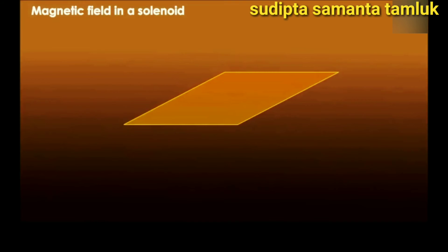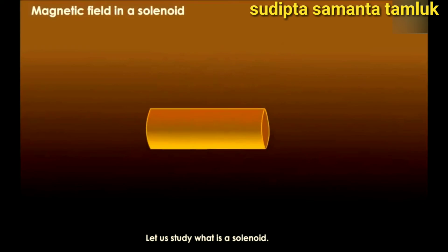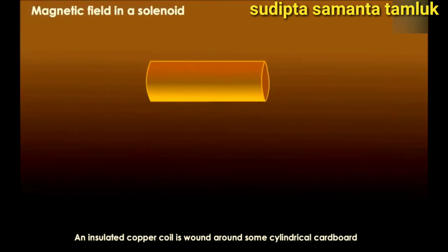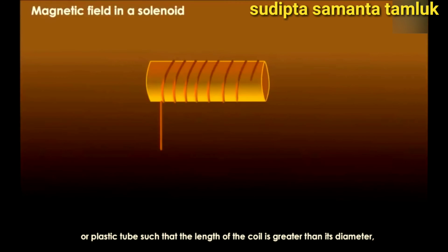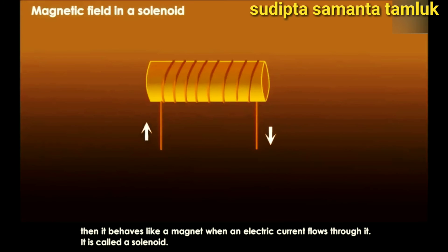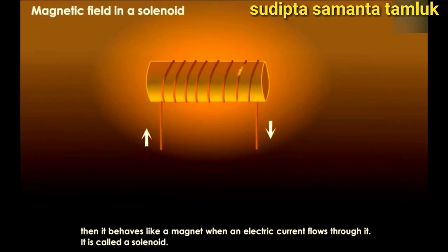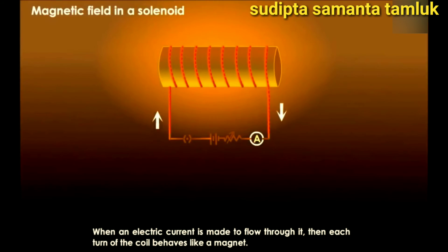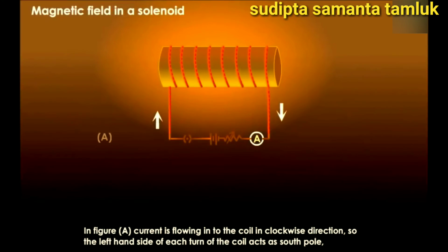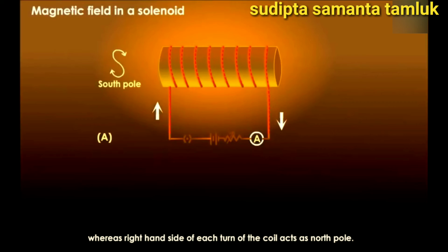Magnetic field in a solenoid. Let us study what is a solenoid. An insulated copper coil is wound around some cylindrical cardboard or plastic tube such that the length of the coil is greater than its diameter. Then it behaves like a magnet when an electric current flows through it. It is called a solenoid. Each turn of the coil behaves like a magnet. In figure A, current is flowing into the coil in clockwise direction. So, the left hand side of each turn of the coil acts as south pole, whereas right hand side of each turn of the coil acts as north pole.